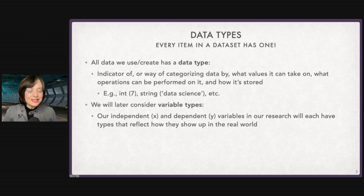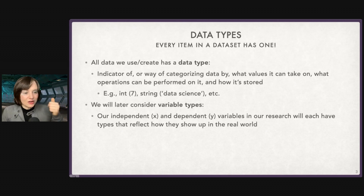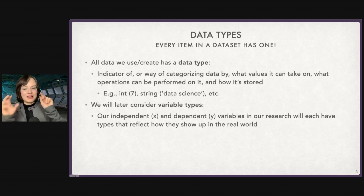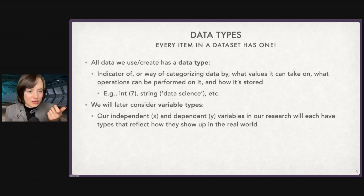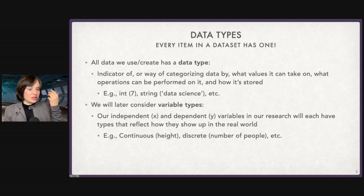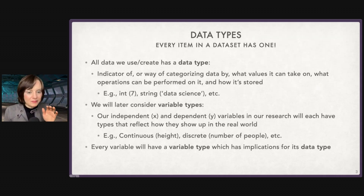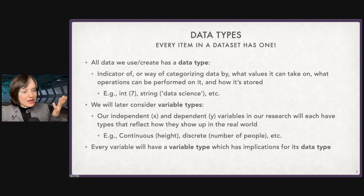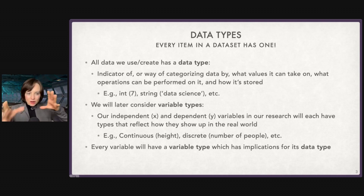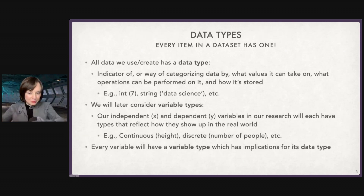All of our variables — the things that we're studying — for example, if I'm doing a study of the relationship between smoking and lung cancer, variables on how much I'm smoking and a variable on how much lung cancer I'm getting are each going to have a variable type that reflects how it shows up in the real world, such as a continuous type or a discrete type. That variable type is going to have implications for the data type, how it's stored. This is all very abstract — it's a bird's eye view first before we pop down into the details.